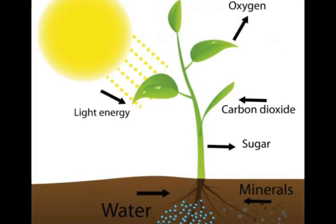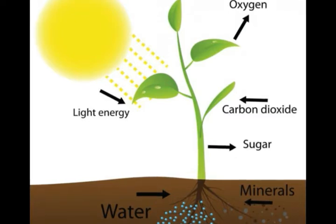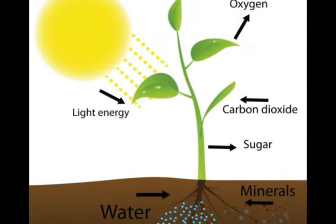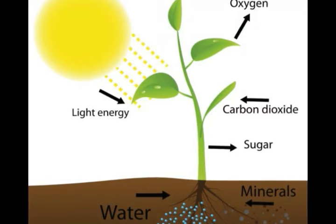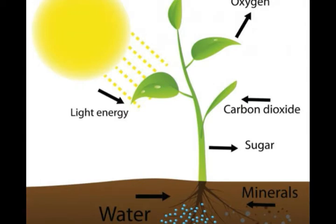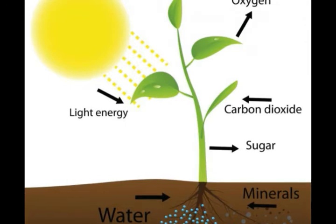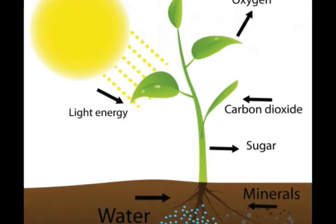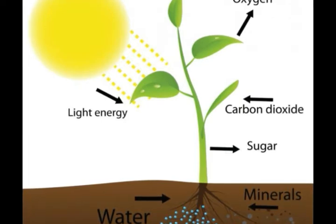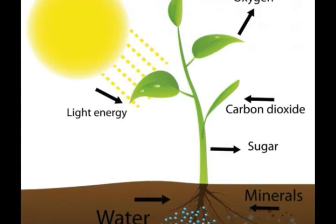Plants and some bacteria use photosynthesis to manufacture food in the form of sugars and other energy-rich substances. Water and carbon dioxide are taken up by the organism, and sunlight provides energy that powers the process. Oxygen happens to be a highly useful by-product. As far as scientists can tell, oxygen levels on the Earth have remained fairly stable for several hundred million years, indicating that oxygen production by photosynthesis has been more or less balanced by its consumption by other processes, such as oxygen-breathing, or aerobic, life forms and chemical reactions.